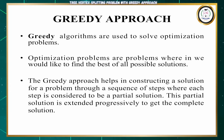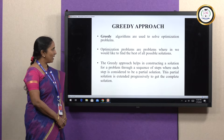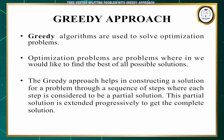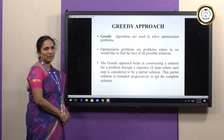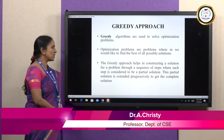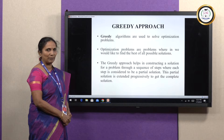First, we will see what is the greedy approach. Greedy algorithms are used to solve optimization problems. Optimization problems are problems wherein we would like to find the best of all possible solutions. The greedy approach helps us in constructing a solution through a sequence of steps, wherein each and every step is considered to provide a partial solution.